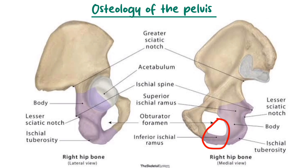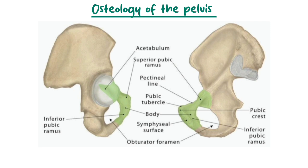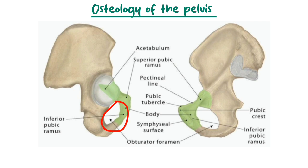Now let's move to the landmarks found on the pubis. The pubis forms the anterior portion of the pelvis. Key landmarks include: number one, the superior pubic ramus, the horizontal branch of the pubis, which contains the pectineal line, an attachment site for muscles. Number two, the inferior pubic ramus, a lower branch that connects to the ischiopubic ramus and serves as a point of attachment for the medial thigh muscles. Together with the ischial ramus, it forms the ischiopubic ramus, also known as the conjoint ramus.